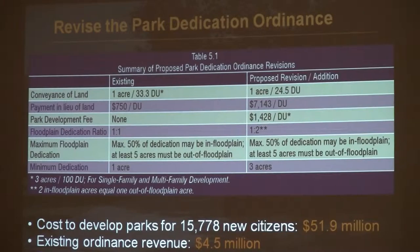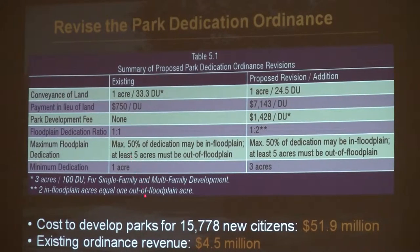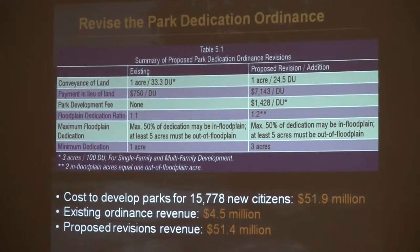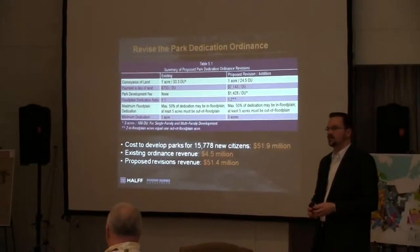Looking at this analysis and where you are today versus your build-out estimate, there are going to be about 15,000 new citizens coming into Louisville. The cost to develop those parks — assuming the cost of land and actually building them — is $51.9 million. What you have currently in your existing ordinance would generate $4.5 million. You can already see the big discrepancy. That gap is going to have to come from bonds or additional sources. However, if you were to do something more along these proposed revisions, you'd get much closer to that cost. What you have today — and this is the case for a lot of cities — does not necessarily cover the true cost of what that impact is going to be.